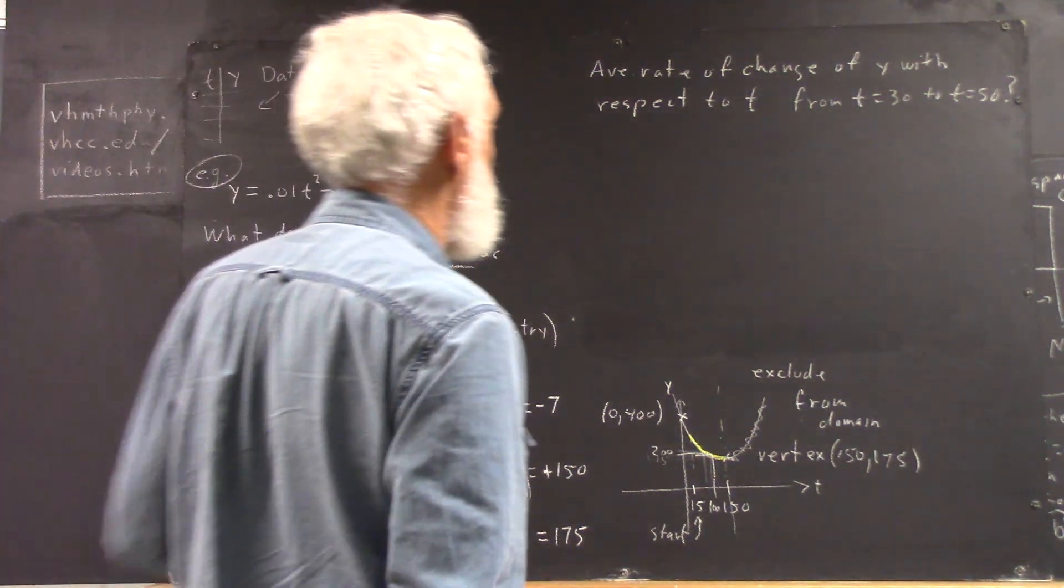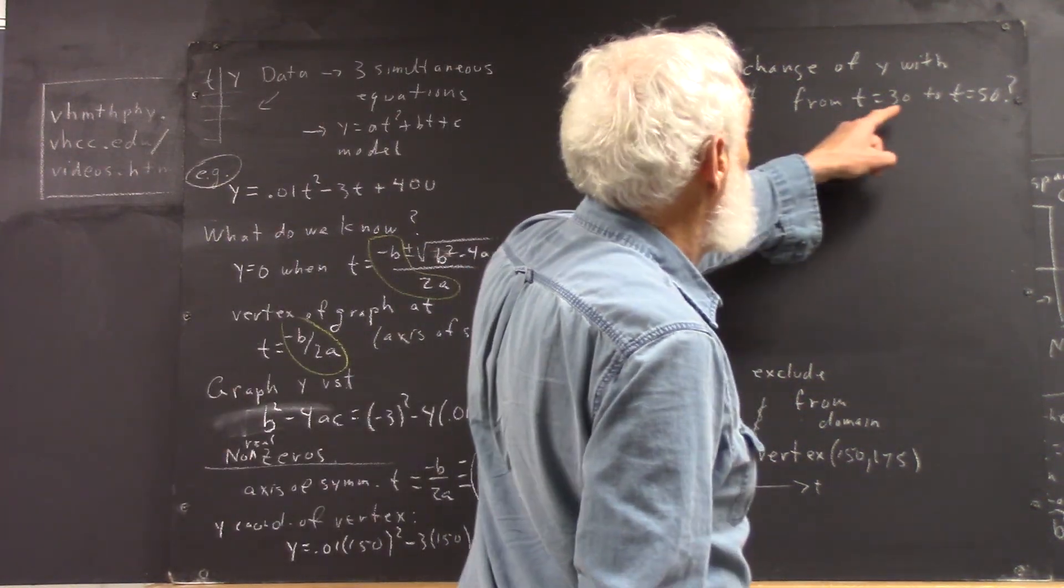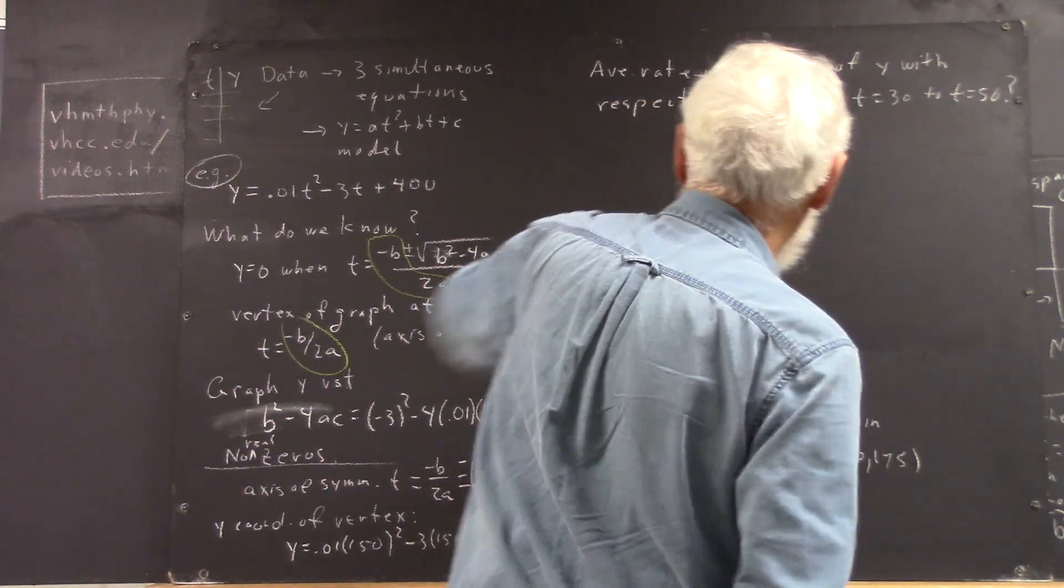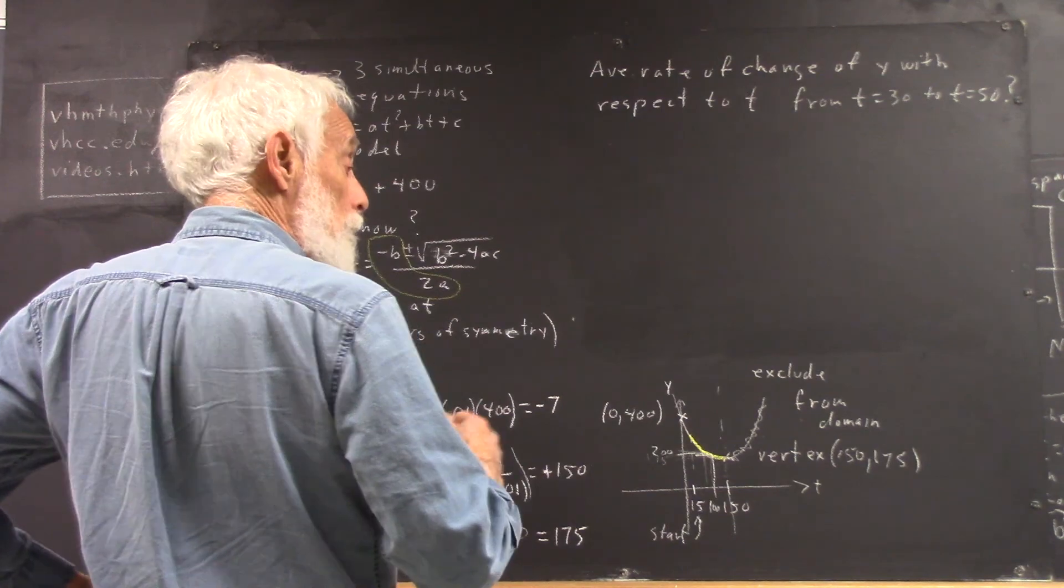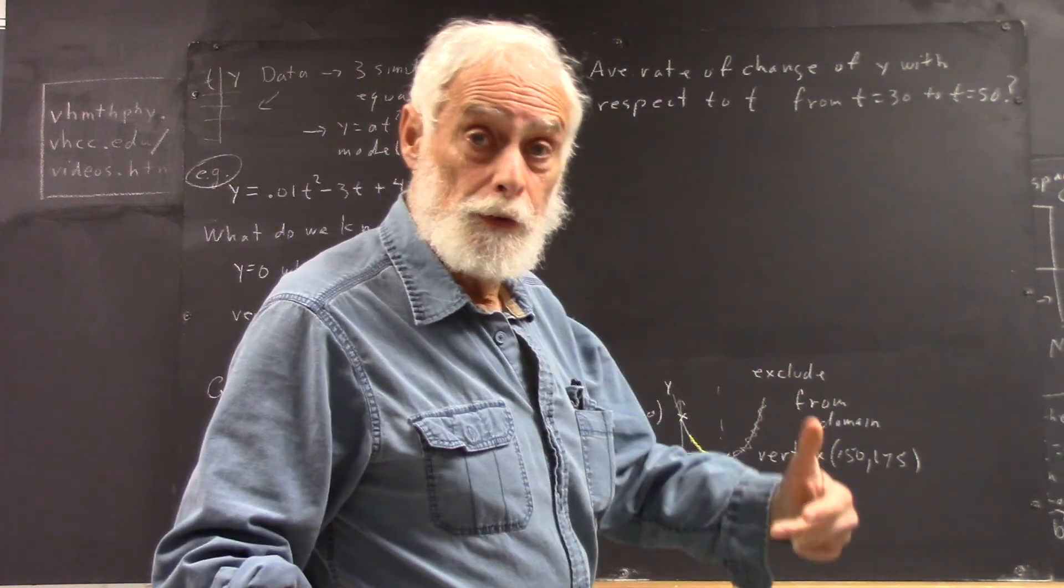Okay, we asked what's the average rate of change of y with respect to t from t equals 30 to t equals 50. Well, the average rate of change is the slope of the graph between the two graph points.